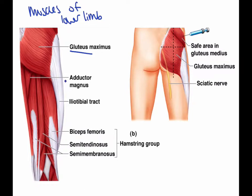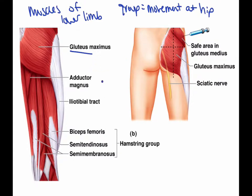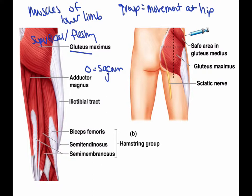The first one we're going to go through is the gluteus maximus. The grouping is that it's going to be movement at the hip. The description is that it's a superficial and fleshy muscle. The origin is the sacrum and the ilium, and the insertion is the femur. It helps to extend the hip, like if you were climbing stairs or jumping. That's the primary action of the gluteus maximus.